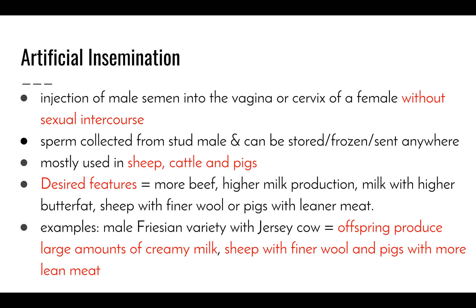An example is the Frisian variety of male cow breeding with a Jersey cow, where the offspring produce large amounts of creamy milk. A second example is sheep with finer wool and pigs with more lean meat. That first example of the Frisian male cow with a Jersey cow to produce large amounts of creamy milk is a great example.